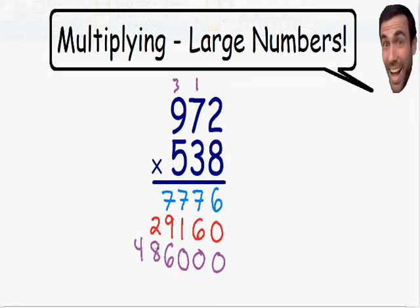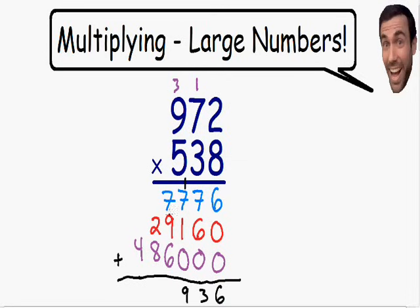Now we have multiplied every number on the bottom with every number on the top and the only thing left to do is add all of our answers together. I am going to put a line underneath all of our answers with a plus sign. Starting on the right: 6 plus 0 plus 0 is just 6. Then 7 plus 6 is 13 — carry the 1. We have 1 plus 7 which is 8, and 8 plus 1 is equal to 9. Moving left: 7 plus 9 is 16, and 16 plus 6 is equal to 22 — carry the 2. Then 2 plus 2 is 4, and 4 plus 8 is equal to 12 — carry the 1. And 1 plus 4 is equal to 5. So this is our final answer: 522,936.